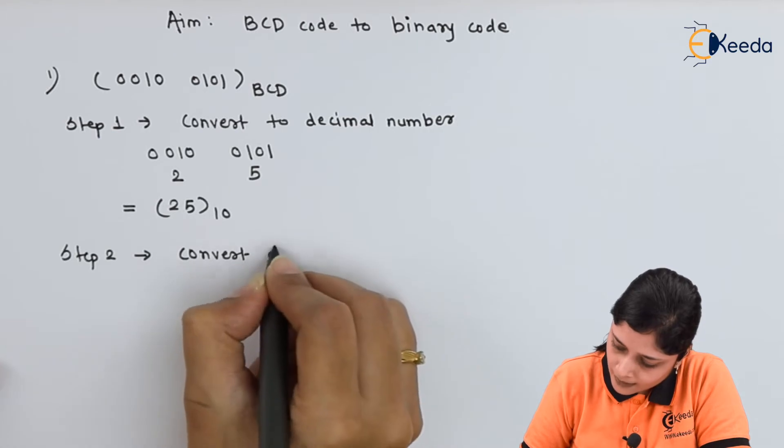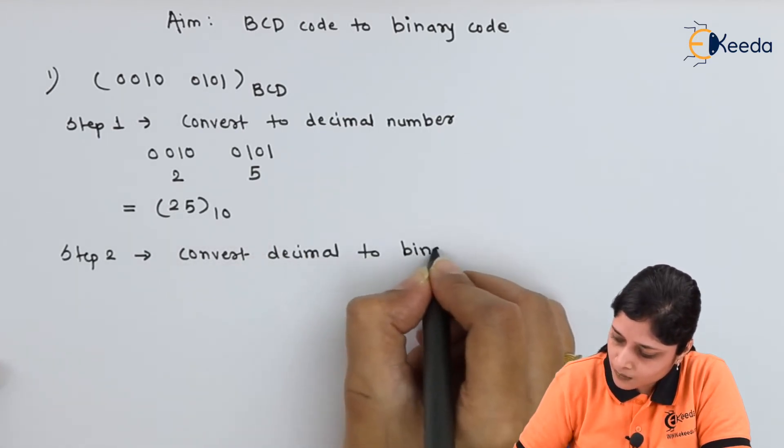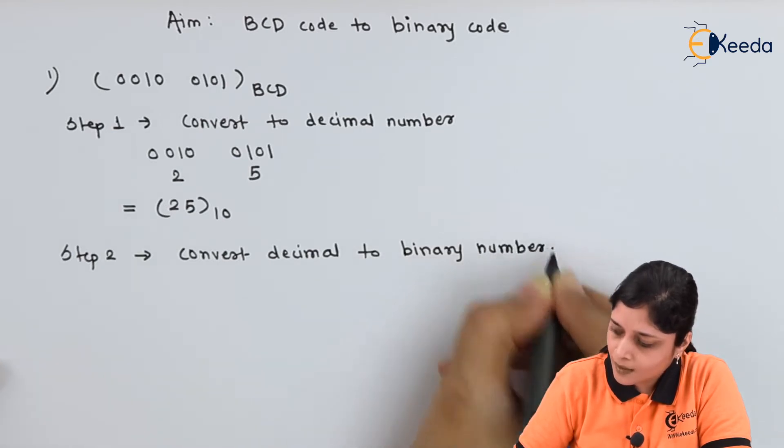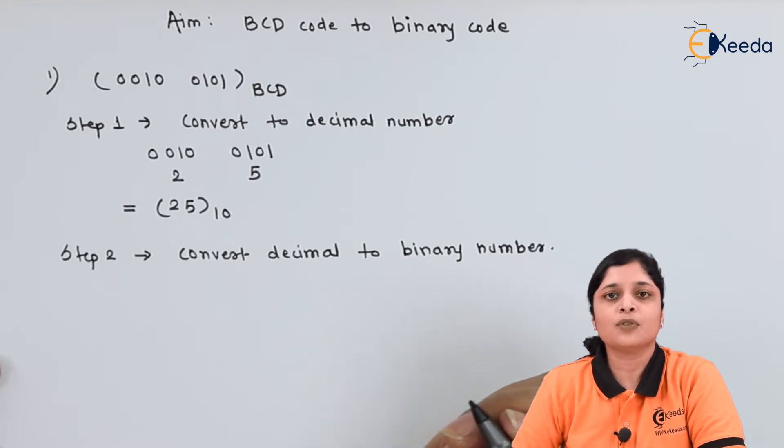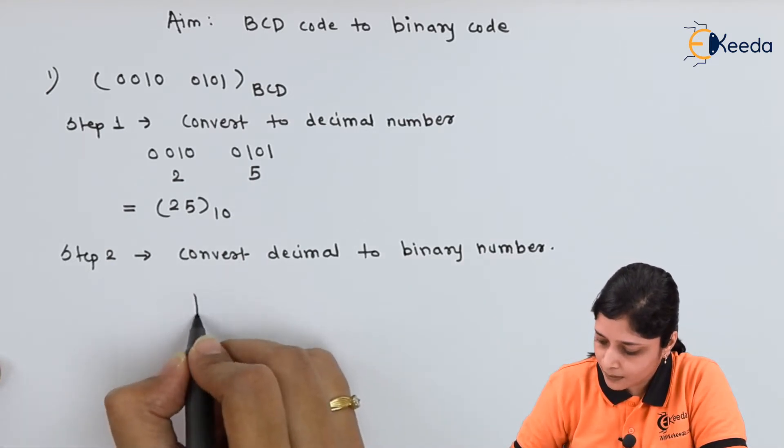Convert decimal to binary number. The procedure you already know. The name of the procedure is successive division method. So, draw one table.